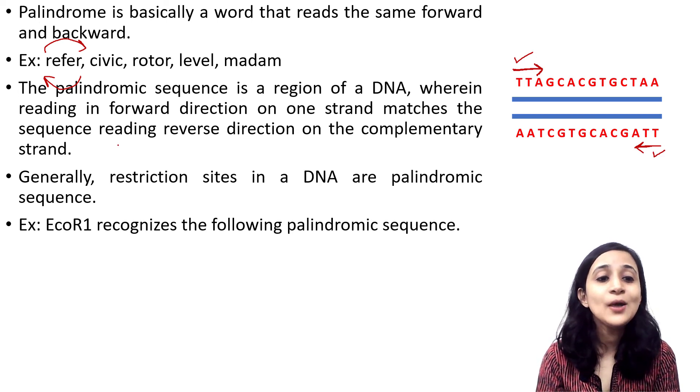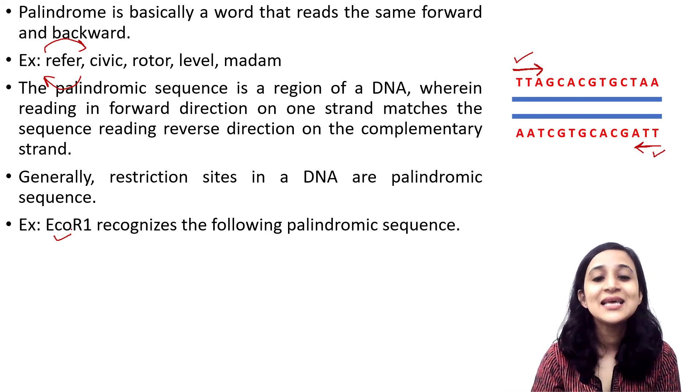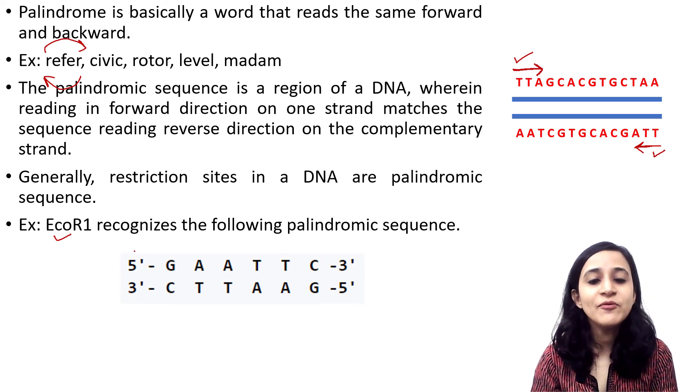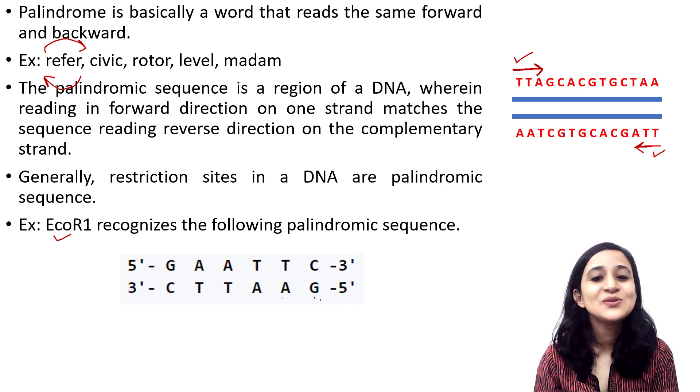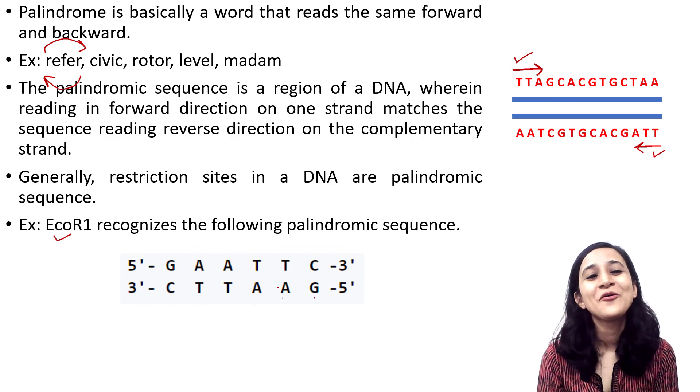For example, EcoR1 is a restriction enzyme that recognizes the following palindromic sequence: from 5 prime to 3 prime this is GAATTC, and from 5 prime to 3 prime it would be GAATTC. This palindromic sequence is recognized by EcoR1.